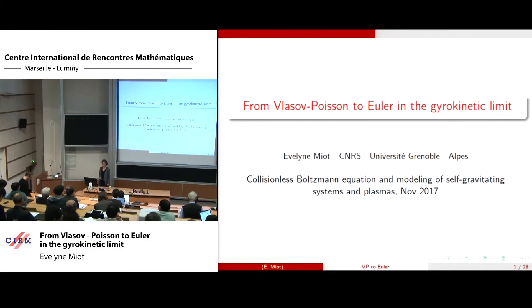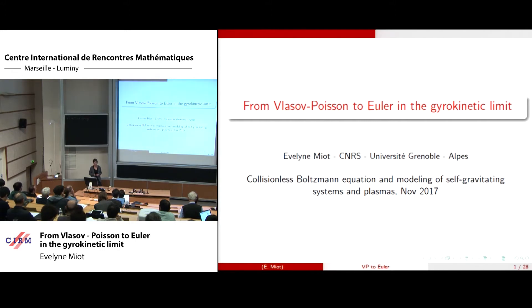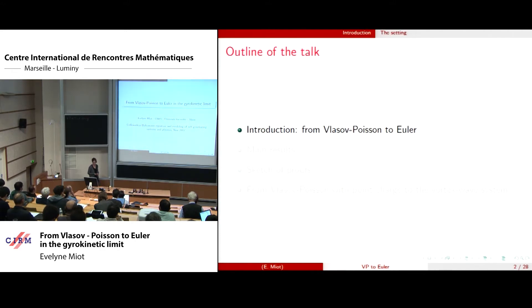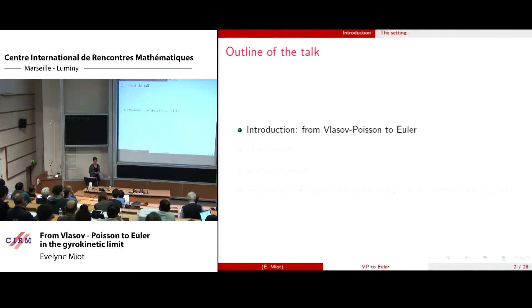Thank you very much for the invitation to this very nice conference in this beautiful place. I would also like to dedicate this talk to Lore. I will start with the introduction of the Vlasov-Poisson equation and the 2D Euler equation, try to see the links between both, and then explain the aim of the talk.